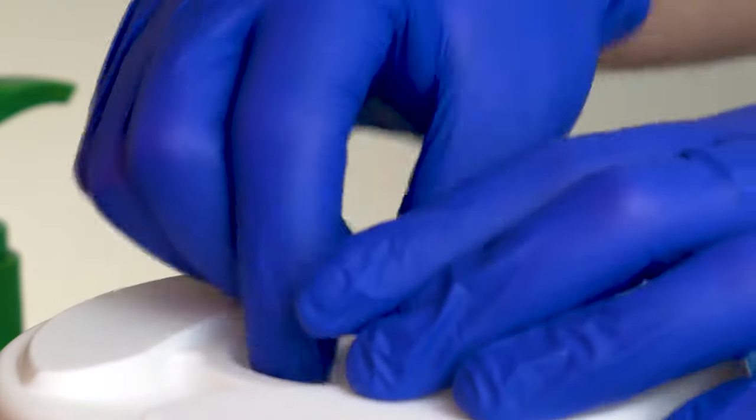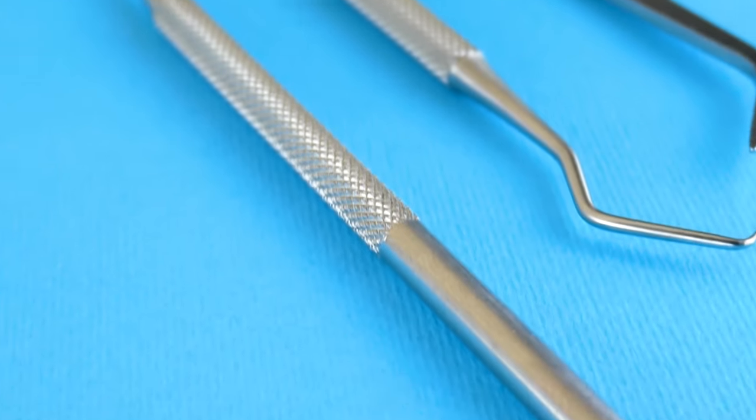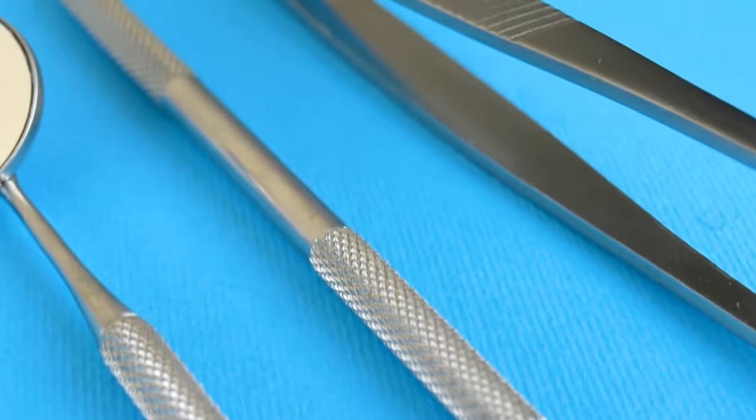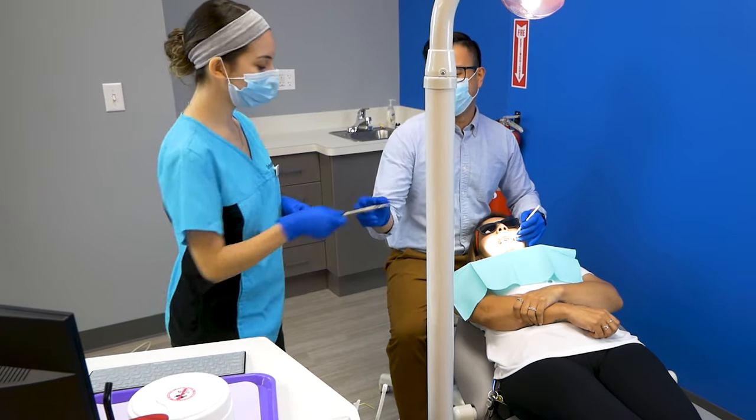The sterile tech puts patient health as a top priority. One of the ways they do this is by making sure all orthodontic instruments are sterilized before being used by assistants or doctors. After an assistant is done with an appointment, they will bring the instruments on a tray to the sterile tech.